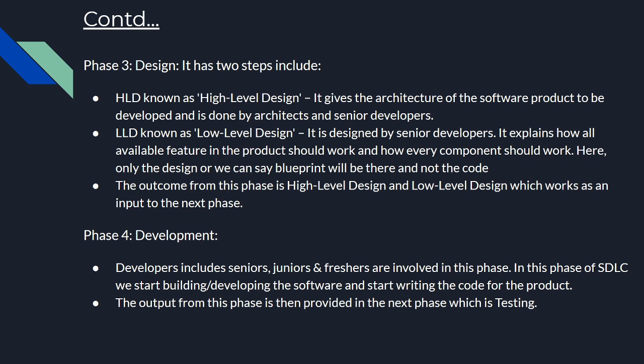In the Designing phase there are two parts: High-Level Design and Low-Level Design. High-Level Design gives the architecture of the software product and is done by architects and senior developers. Low-Level Design is also done by senior developers and explains how all available features and every component should work. At this stage only the design or blueprint is created — no coding yet. The outcome of this phase is the High-Level and Low-Level Design documents upon which development and testing will be done.